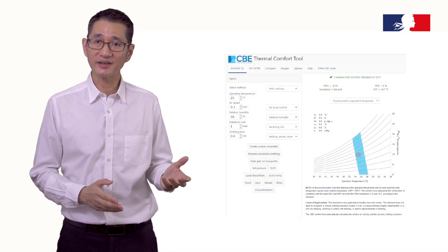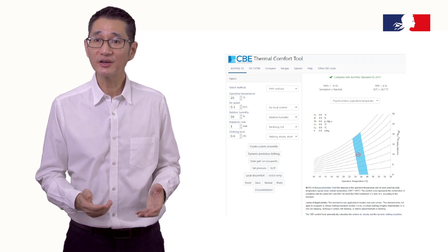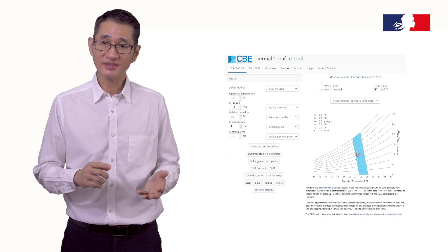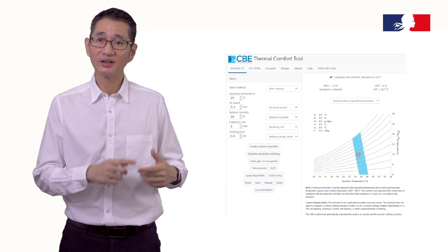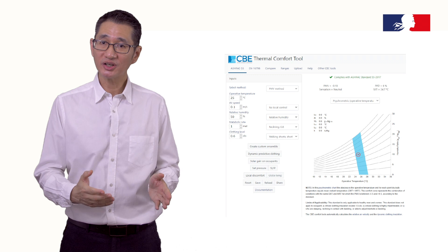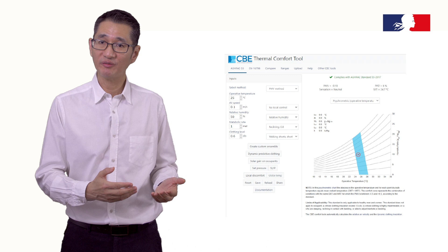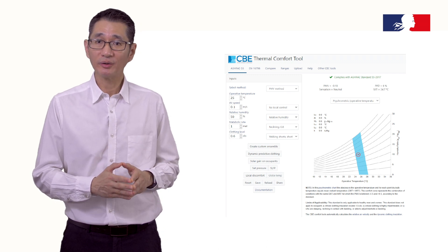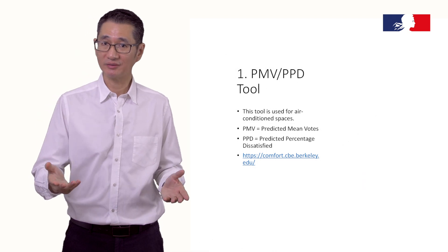The first tool to be introduced is the PMV PPD tool, used for air-conditioned spaces like an office. This tool is very comprehensive and involves heavy computation — it addresses air temperature, air speed, mean radiant temperature, relative humidity, type of clothes worn, and type of activities. Computation is done by computers, and there are many websites offering PMV PPD calculation. One of the more popular ones is provided by Berkeley — do visit it and give this tool a try.